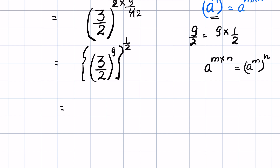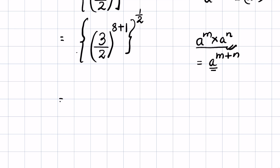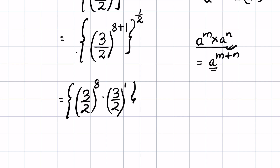Now (3 upon 2) whole raised to the power of 9 we can write as (3 upon 2) raised to the power of 8 plus 1, then whole raised to the power of 1 upon 2. Using the identity a raised to the power m times a raised to the power n equals a raised to the power m plus n, we split this as (3 upon 2) raised to the power 8 times (3 upon 2) raised to the power 1, then whole raised to the power of 1 upon 2.